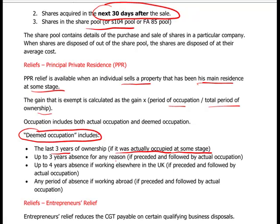Further deemed occupation rules: up to three years' absence for any reason is treated as occupation, provided the absence is both preceded and followed by actual occupation. Up to four years' absence if working elsewhere in the UK — again, preceded and followed by actual occupation. Any period of absence if working abroad is fully covered, since being required to work abroad is not the individual's choice, so capital gains tax will not apply for that period.